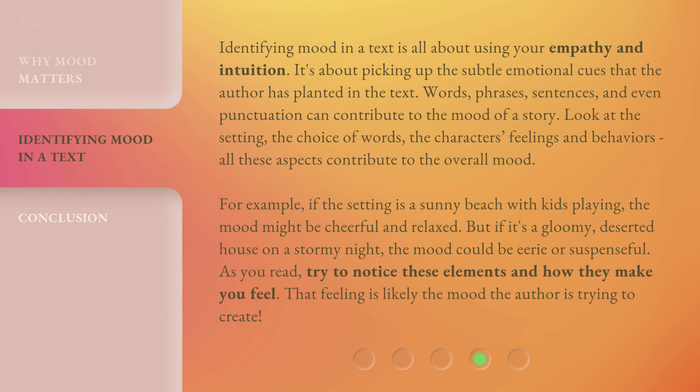Identifying mood in a text is all about using your empathy and intuition. It's about picking up the subtle emotional cues that the author has planted in the text. Words, phrases, sentences, and even punctuation can contribute to the mood of a story. Look at the setting, the choice of words, and the character's feelings and behaviors.